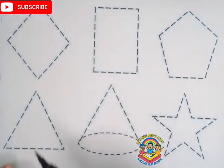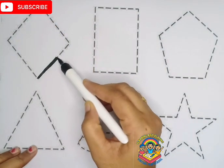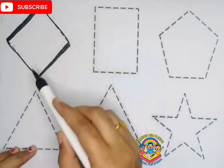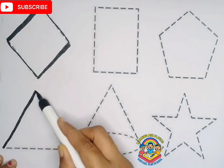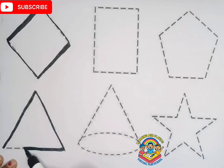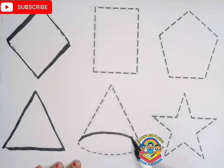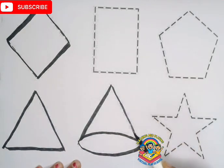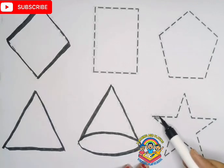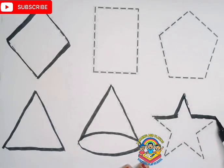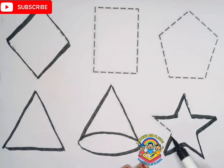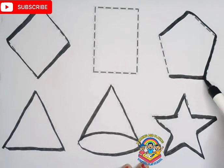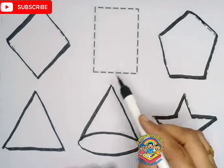This is diamond symbol. What is this called? This is called diamond symbol. This is triangle. This is cone shape. This is star. What is this called? This is called star. This is pentagon.